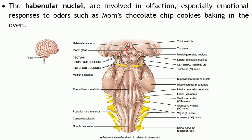The second part of the epithalamus is the habenular nucleus, located just superior to the pineal gland. These are mainly involved in olfaction — specifically the emotional response to certain odors. For example, smelling cookies being baked by your mother gives you a pleasant feeling; that emotional response to certain odors is taken care of by the habenular nucleus.